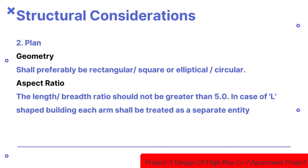The geometry should be rectangular, square, elliptical or circular. The length to breadth ratio should not be greater than 5. In case of an L-shaped building, each arm shall be treated as a separate entity.